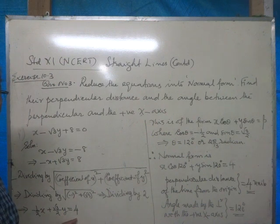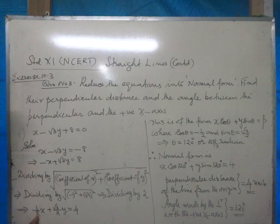In this case, p is 4, cos theta is equal to negative half, and sin theta is equal to root 3 by 2.